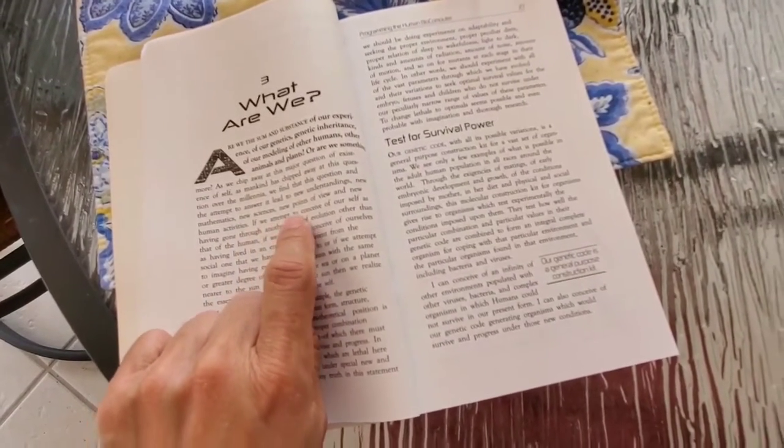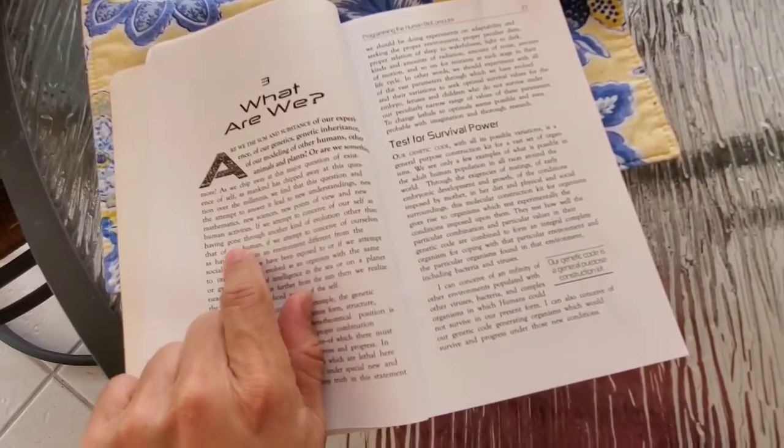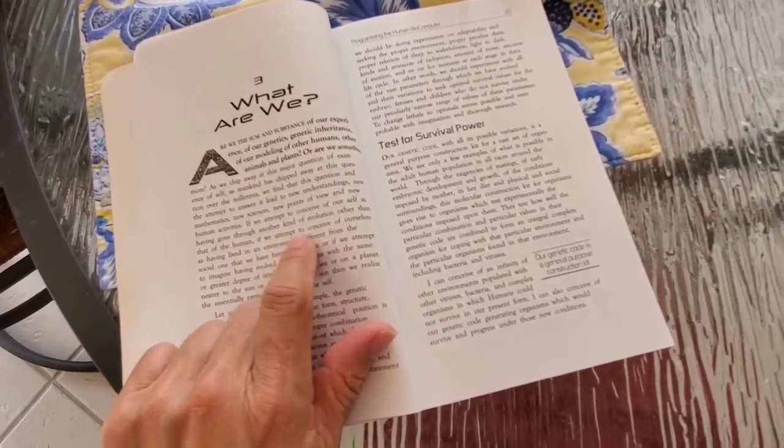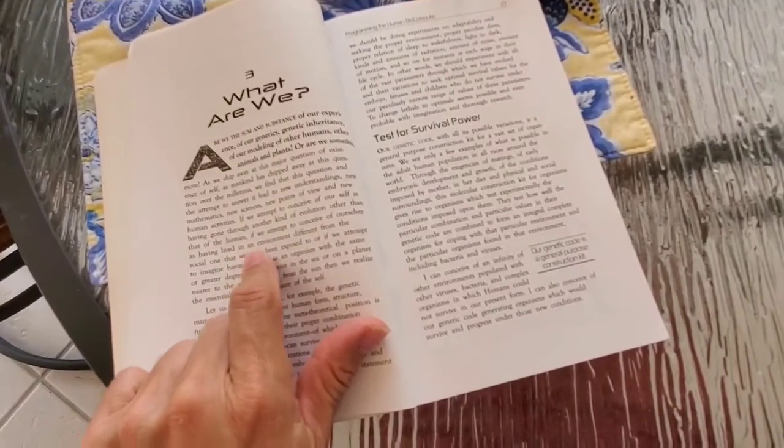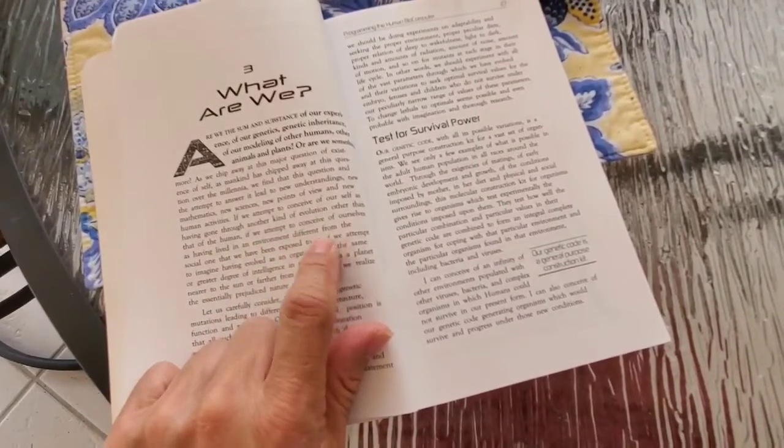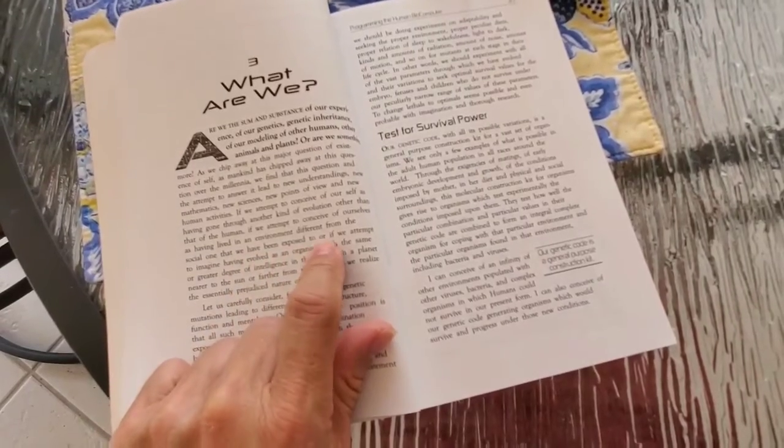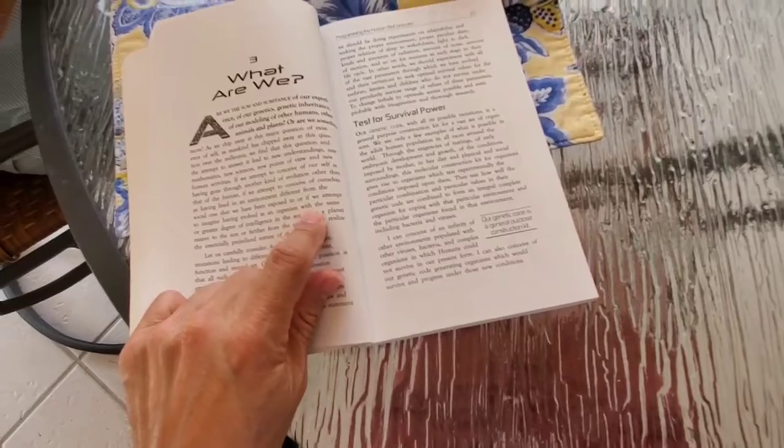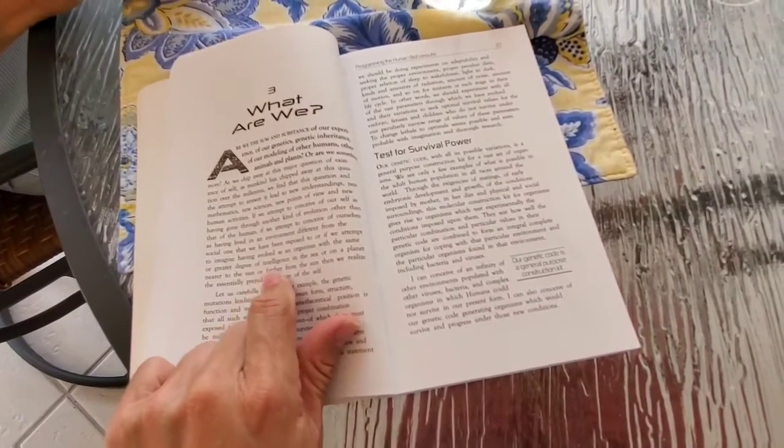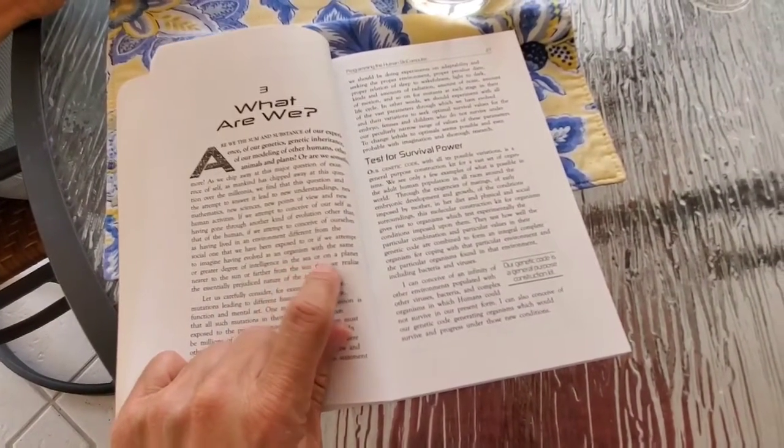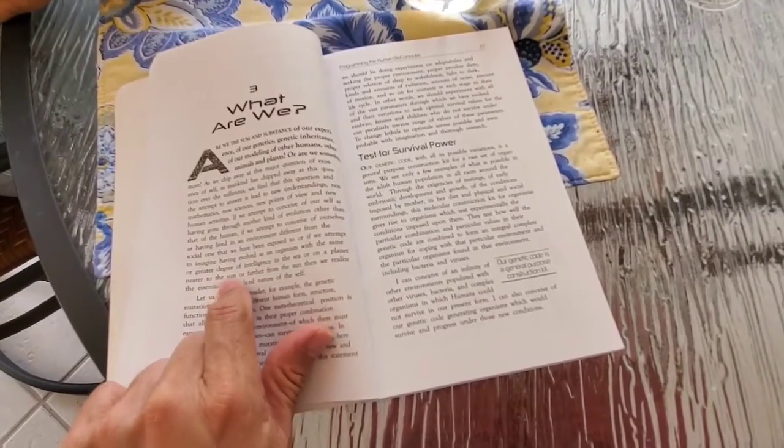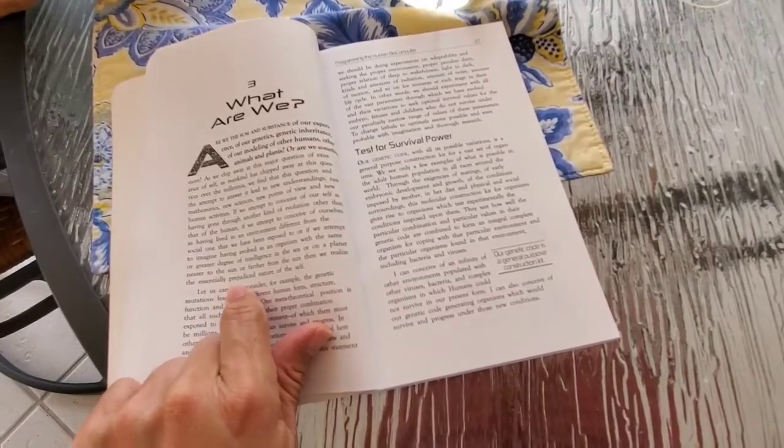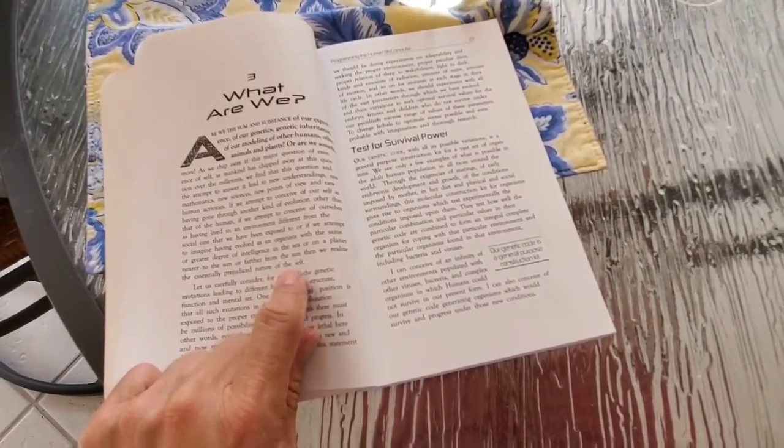If we attempt to conceive of ourselves as having gone through another kind of evolution other than that of human, if we attempt to conceive of ourselves as having lived in an environment different from the social one that we have been exposed to, or if we attempt to imagine having evolved as an organism with the same or greater degree of intelligence in the sea or on a planet near the sun or farther from the sun, then we realize the essentially prejudiced nature of the self.